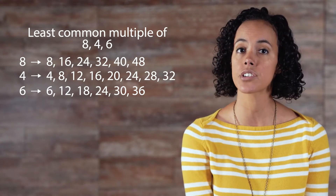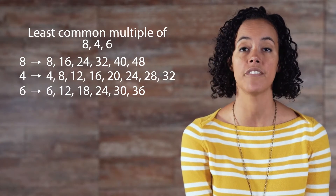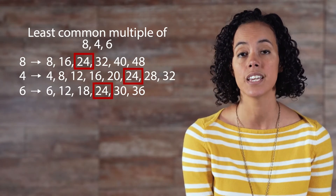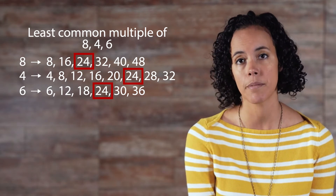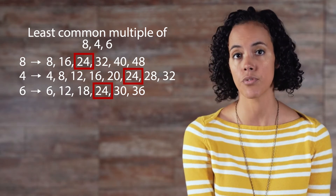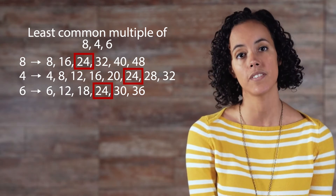It's important to note that there is more than one way to determine the least common multiple. One way is to simply list all the multiples of the values in question and select the smallest shared value, as seen here. This illustrates that the least common multiple of 8, 4, and 6 is 24, because it is the smallest number that 8, 4, and 6 can all divide into evenly.